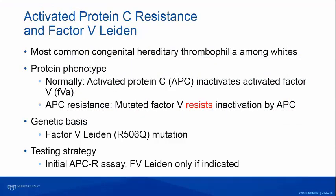Activated protein C resistance is the most common hereditary thrombophilia among the white population, and its genetic basis is the Factor V Leiden mutation. Normally, activated protein C cleaves factor V to inactivate it. But if you have APC resistance — if the factor V is mutated — it resists this inactivation and puts the patient at risk for venous thromboembolism. Since this disease was described in 1996, we implemented the first-generation APC resistance assay and decided we would only do genetic testing if the assay was abnormal, as protein-based tests are cheaper than DNA-based tests.